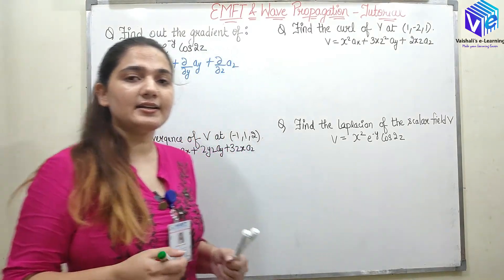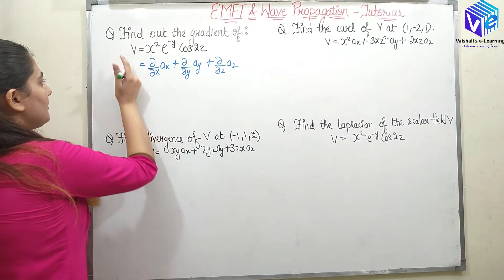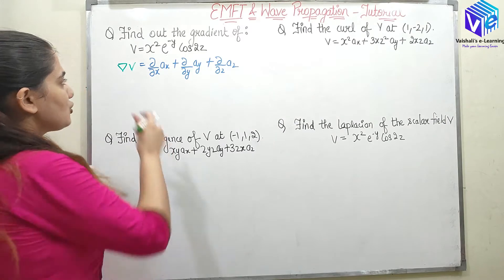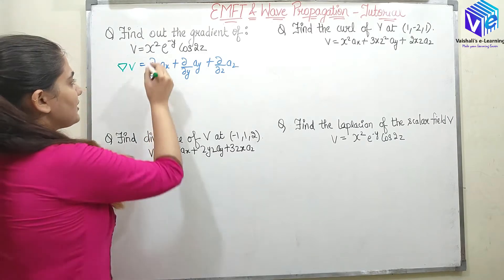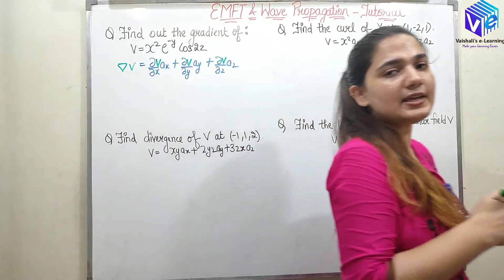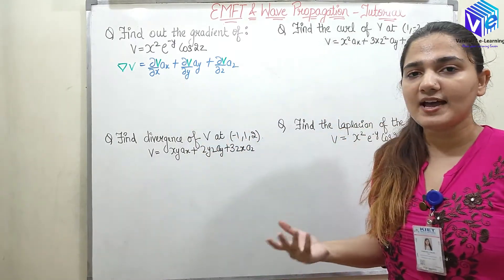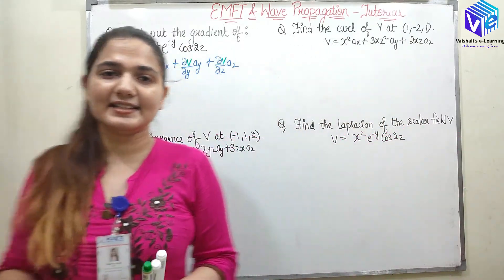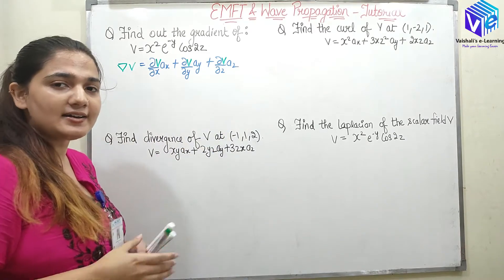Now, what is the gradient? The gradient was the first usage of the del operator, symbolized as del of V, where V is the scalar potential. So the gradient of V is represented as (∂V/∂x)ax + (∂V/∂y)ay + (∂V/∂z)az. We just need to perform partial differentiation, which we can do very easily.